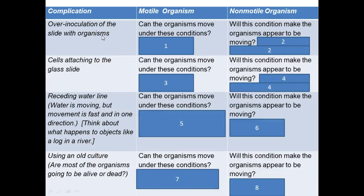What are some complications that we run into and how does this affect our results? If we have a known motile organism and we over-inoculate them on the slide, can the organisms move under those crowded conditions? If they're crowded, they're not going to move as well as we would like. It would be really difficult to see that motility.